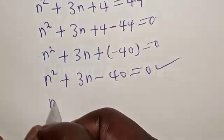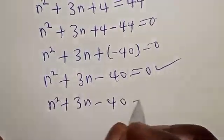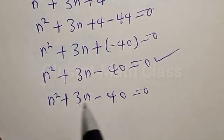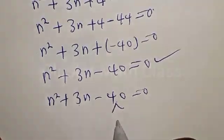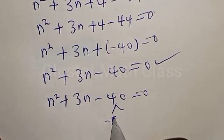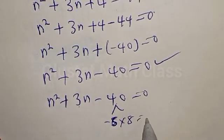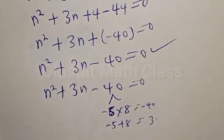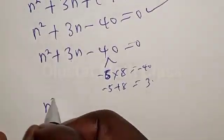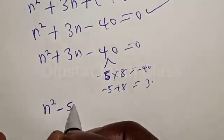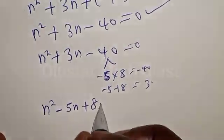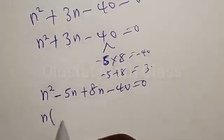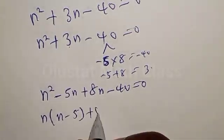We have n squared plus 3n minus 40 equal to 0. We find two numbers such that their product gives minus 40 and their sum gives 3. If we have minus 5 multiplied by 8, that is minus 40. Then we split the middle term: n squared minus 5n plus 8n minus 40 is equal to 0.